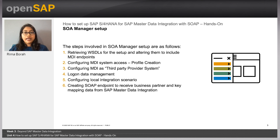First is the retrieval of WSDLs and altering them to include MDI endpoints. Second, configuring MDI system access. Third, configuring MDI as a third-party provider system. Fourth, the logon data management. Fifth, configuring local integration scenario. And sixth, creating a SOA endpoint to receive business partner and key mapping data from SAP MDI. The steps to configure SOA manager for successful integration with SAP Master Data Integration are provided in detail in the documentation link at the end of this unit.